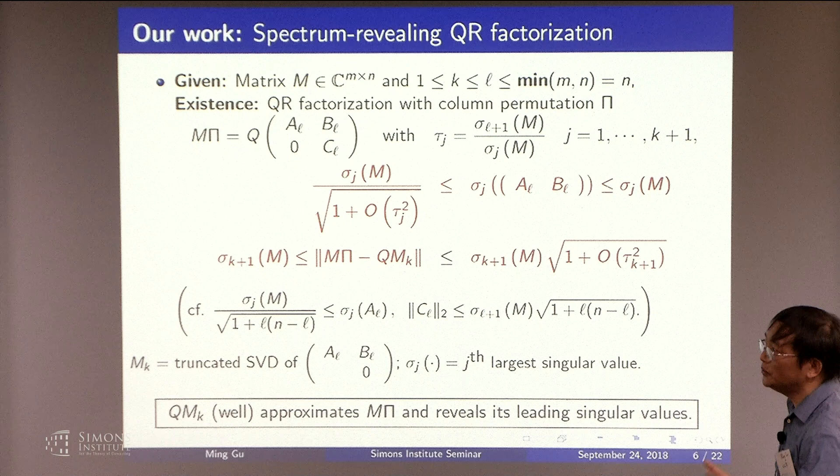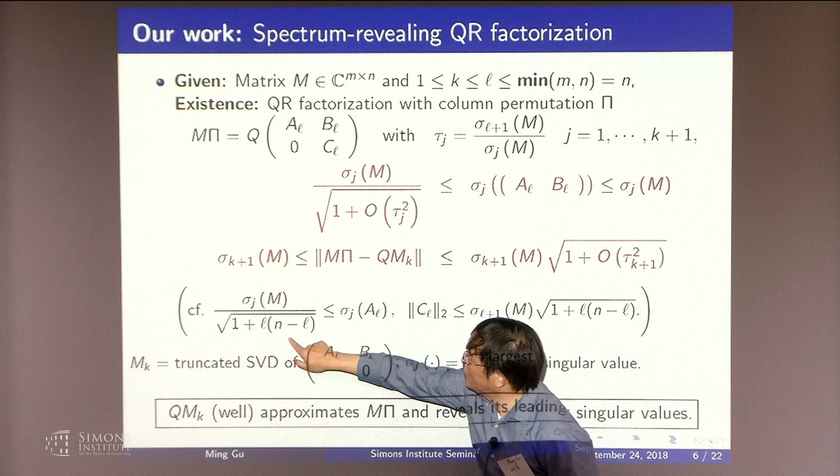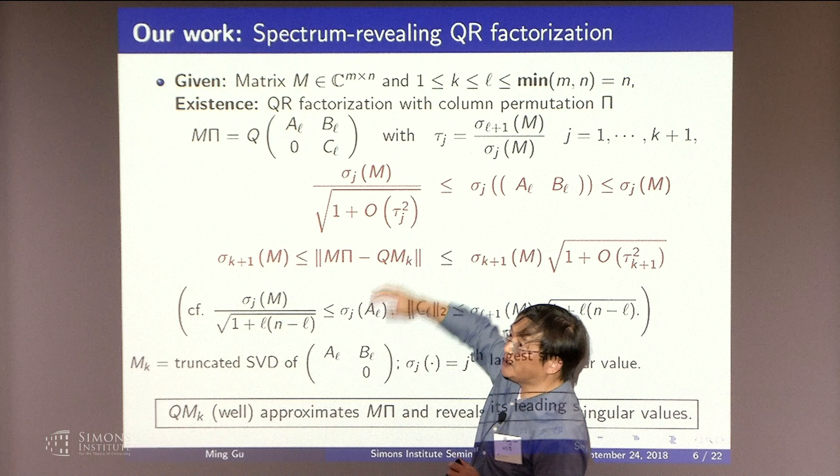This is different than the previous result, in that here you only have a constant factor, right? This is a constant, domain-dependent constant. You only get a fraction. But here you could expect to get a very accurate approximation.